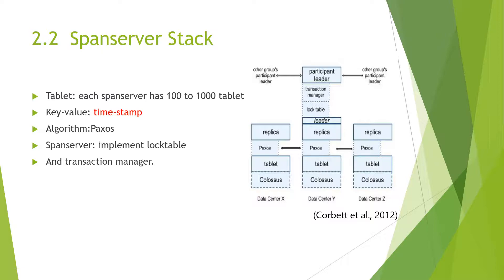Above the Paxos layer is the lock table. A lock table is implemented on each leader replica's span server to manage concurrency. The lock table records the log information needed for two-phase commit. Whether on Spanner or Bigtable, long-term transactions can perform very poorly when encountering conflicts. There is also a transaction manager on the span server of each leader replica. Transaction managers are needed when a transaction crosses multiple Paxos groups.